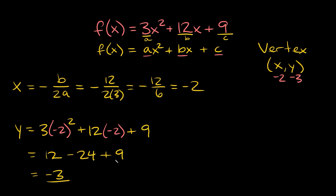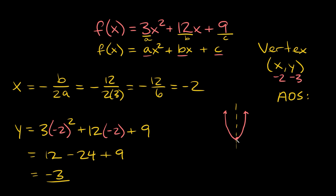The next thing we can easily find is the axis of symmetry. The axis of symmetry is the vertical line that splits a parabola in half, and it always runs through the vertex. So the axis of symmetry will always be your x-coordinate of your vertex. Here our x-coordinate is negative 2, so we say the axis of symmetry is at x equals negative 2. Easy peasy lemon squeezy.